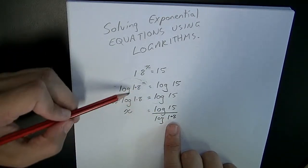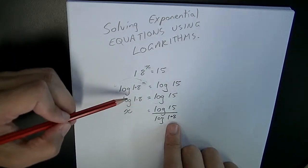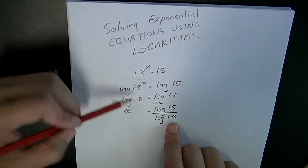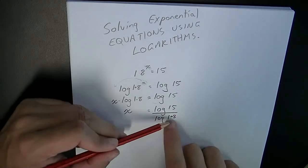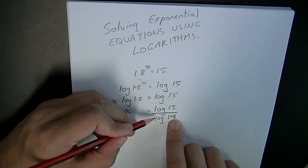Now, I've chosen to use log base 10, and your calculator has no problem using log base 10. So once you're at this stage—x equals log 15 over log 1.8—you can just type that directly into your calculator.